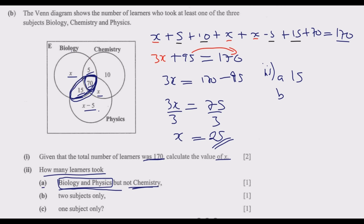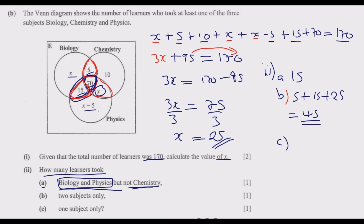Part B asks for learners who took exactly two subjects. The regions for exactly two subjects are: Biology and Chemistry (5), Biology and Physics (15 — but this is the all-three region, so we use x here), and Chemistry and Physics. Adding these: 5 plus 15 plus x, where x is 25, gives 5 plus 15 plus 25 equals 45. So 45 is the answer.